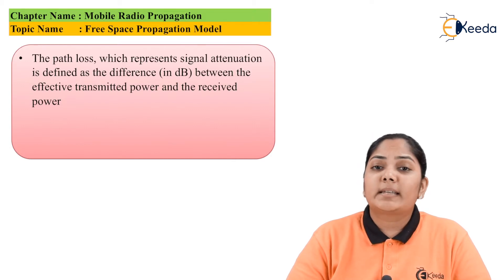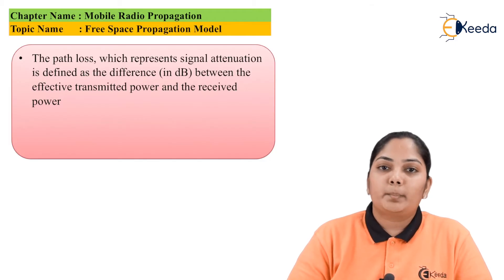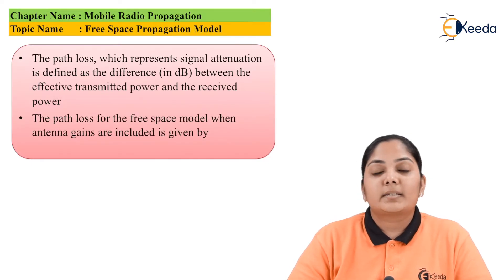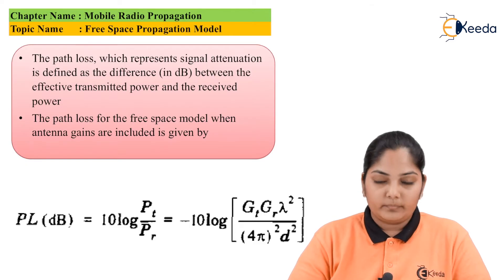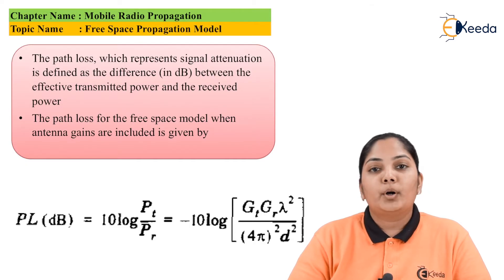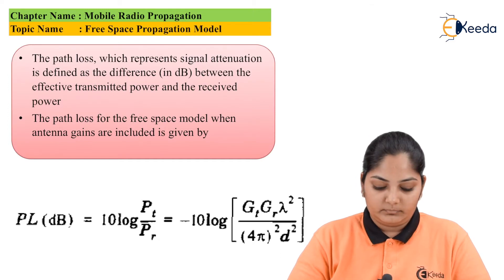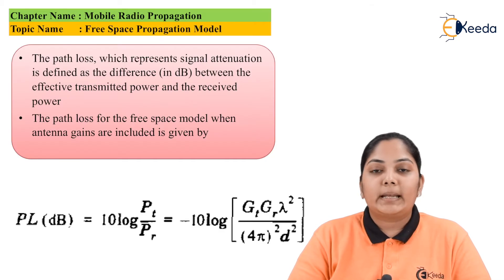Path loss is the signal attenuation, which occurs as the difference between the transmitted power and the received power. The path loss in a free space model when the antenna gains are included is given by: PL (in dB) = 10 log(Pt / Pr), which can also be written as −10 log(Gt × Gr × λ² / ((4π)² × d²)).